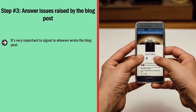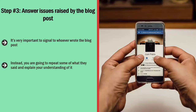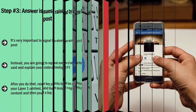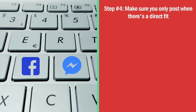Step number three: answer issues raised by the blog post. It's very important to signal that you actually read the post you're commenting on. Avoid posting 'hey good job' or 'I love this post' — that's garbage. Instead, repeat some of what they said, explain your understanding of it, raise issues or questions, and mention where you disagree. Then raise key points related to your layer one content, quote a segment of your content, and post your link. Done properly, your comment enhances the content rather than looking like spam.